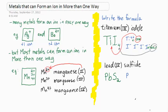Why? Because lead four is a four plus ion. Sulfide is always a two minus ion. To get balance, you need two sulfides.